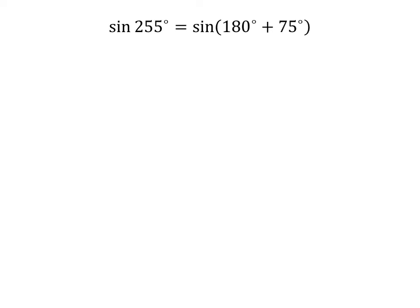255 degrees is equal to 180 degrees plus 75 degrees. So, sine of 255 degrees is equal to sine of 180 degrees plus 75 degrees.